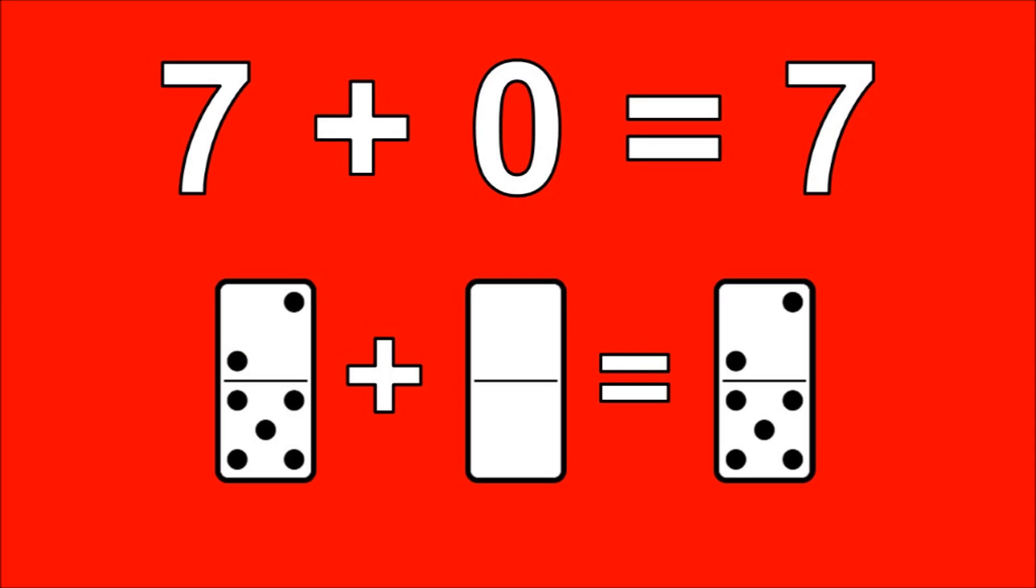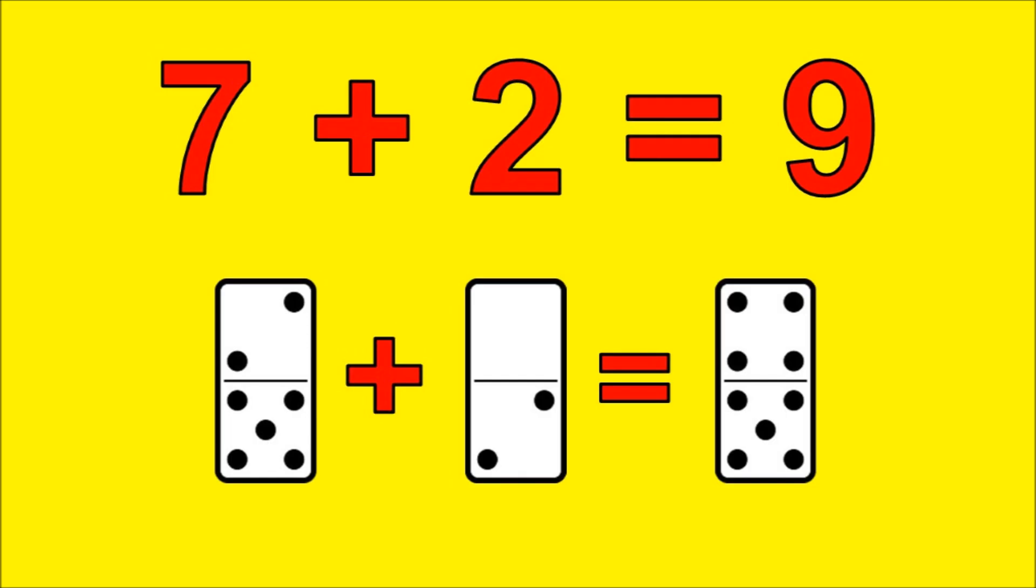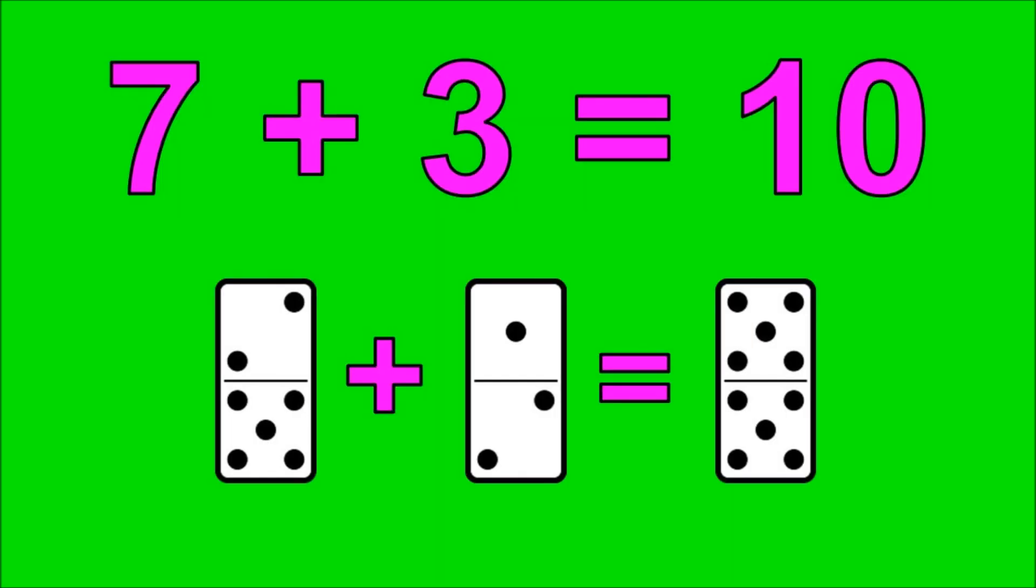7 plus 0 is 7, 7 plus 1 is 8, 7 plus 2 is 9, 7 plus 3 is 10.